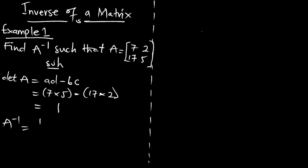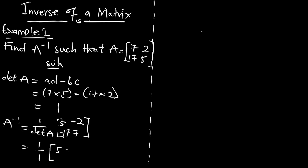A inverse is now 1 on the determinant of A, multiplied by the matrix where we interchange the position of 7 and 5 on the principal diagonal — so that gives 5 and 7 — and we negate the minor diagonal: negative 2 and negative 17. Since the determinant is 1, and 1 over 1 is just 1, the inverse of this matrix is [5, -2; -17, 7].